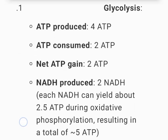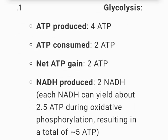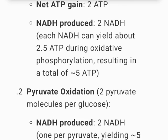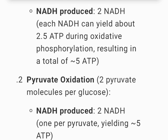1. Glycolysis. ATP produced: 4 ATP. ATP consumed: 2 ATP. Net ATP gained: 2 ATP. NADH produced: 2 NADH. Each NADH can yield about 2.5 ATP during oxidative phosphorylation, resulting in a total of 5 ATP.